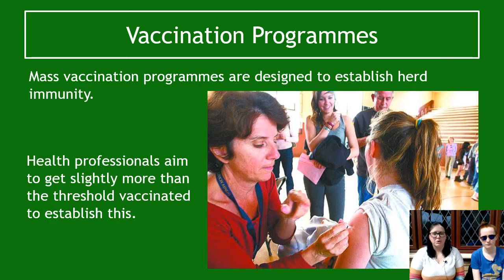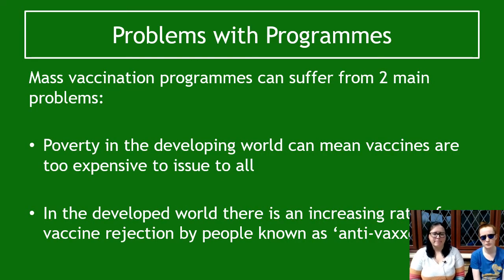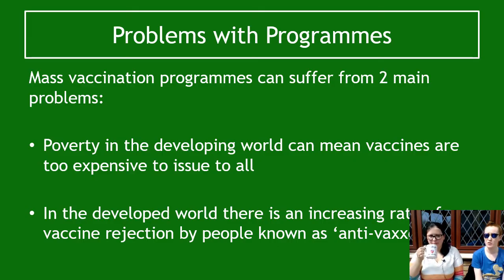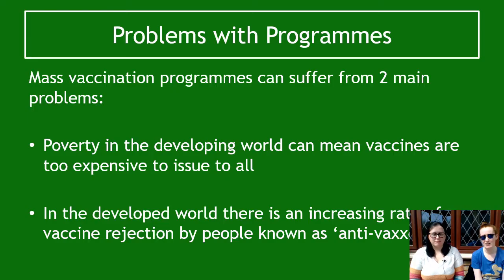There are some problems with mass vaccination programs. The first is that poverty in developing countries can mean they might not get the vaccine because it's too expensive. If your country doesn't have enough money to get the vaccines, then you can't get them, and that's obviously a massive problem. The other problem, which is coming up more and more in the 21st century, is the idea of anti-vaxxers.